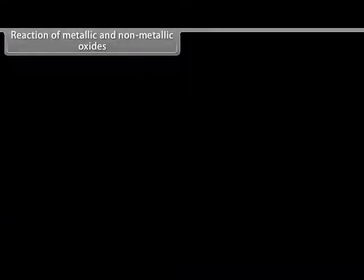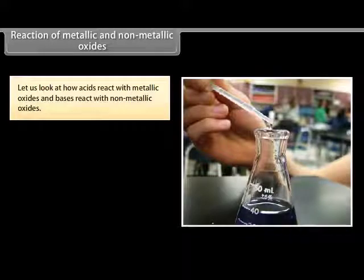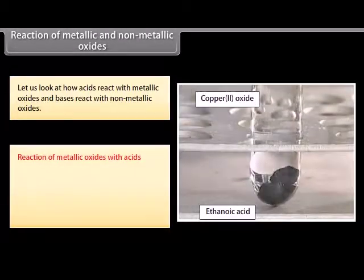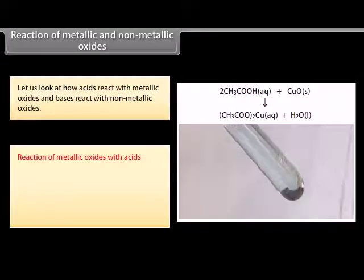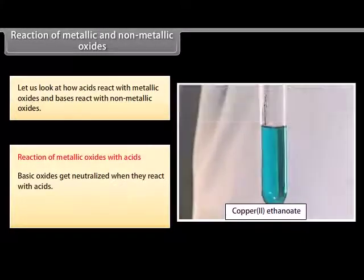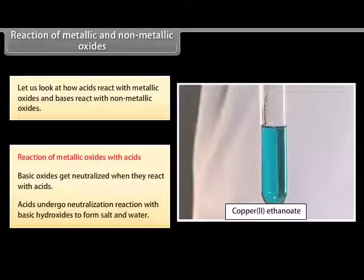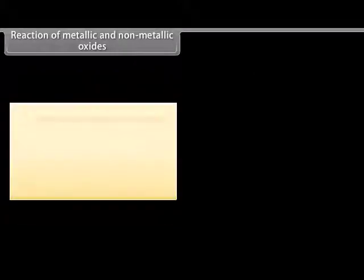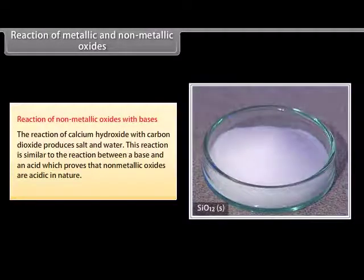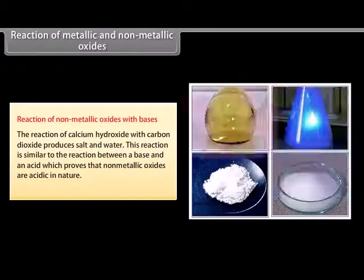Now let us look at how acids react with metallic oxides and how bases react with non-metallic oxides. Oxides that add on hydroxyl ions to their molecules are called basic oxides. These oxides get neutralized when they react with acids — acids undergo neutralization reaction with basic hydroxides to form salt and water. The reaction of calcium hydroxide with carbon dioxide produces salt and water, similar to the reaction between a base and an acid. This proves that non-metallic oxides are acidic in nature.